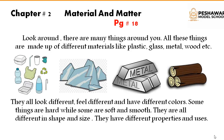They all look different, feel different, and have different colors. Some things are hard while some are soft and smooth. They are all different in shape and size, and they have different properties and uses. As you can see in the pictures of different materials, all of them are different in size and shape, and they also have different properties and uses.